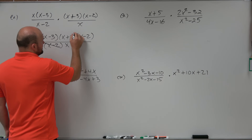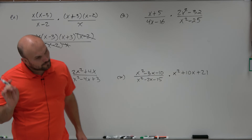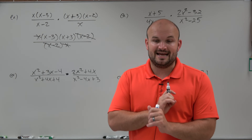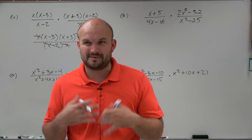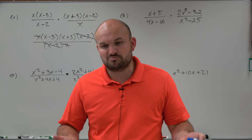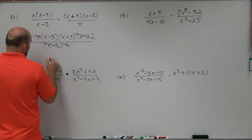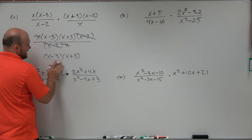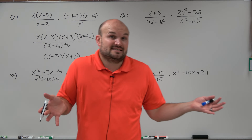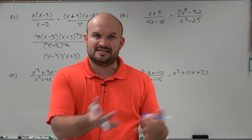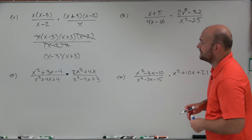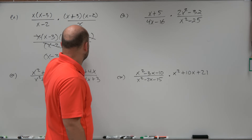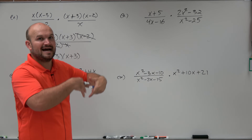I have (x minus 2) in the denominator and (x minus 2) in the numerator — those cancel. I have an x in the numerator and an x in the denominator — those cancel too. I prefer to leave answers in non-expanded form, so x minus 3 times x plus 3 is acceptable, though you should know that equals x squared minus 9. The answer is (x minus 3)(x plus 3) over 1, which we just write as (x minus 3)(x plus 3). On a multiple choice test, multiply it out to check your answer.